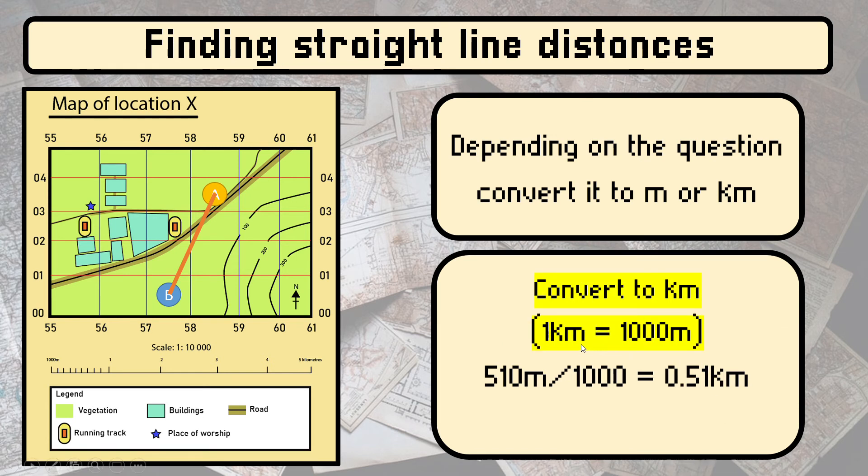You have to remember that 1 km equals 1000 meters. Therefore, we need to take our answer divided by 1000 and then you will get 0.51 kilometers. Please remember how to find the straight line distance.